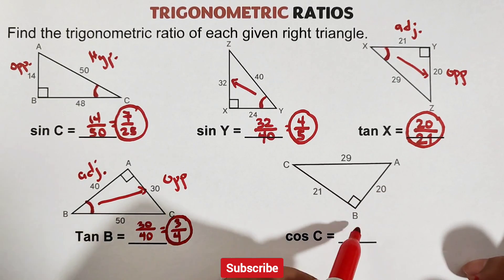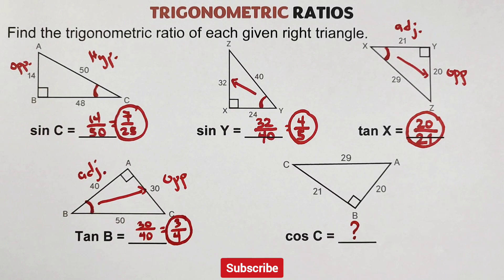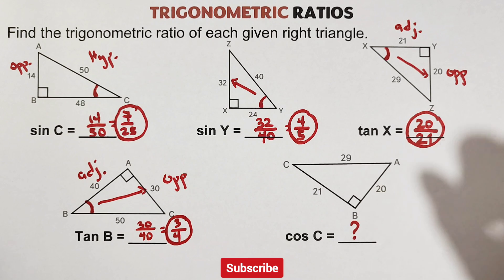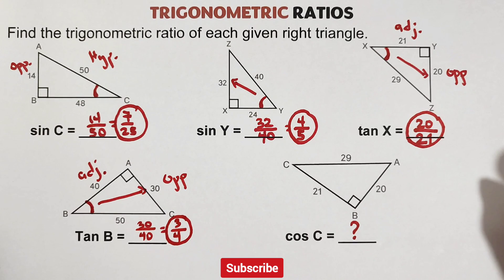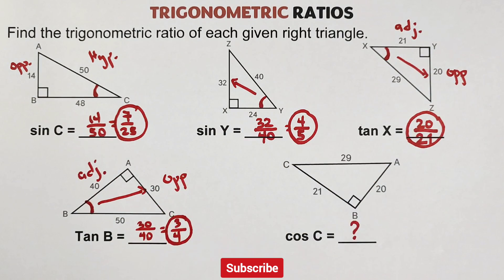For this part, I want you to answer this one — let me see it in the comment section: what is the ratio for cosine C given this right triangle? I hope you learned something from this video on how to understand and memorize the six trigonometric ratios and how to find the ratio given a right triangle. If you're new to my channel, don't forget to like and subscribe and hit the bell button for updates. Again, it's me Teacher Gon — maraming salamat, bye!